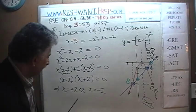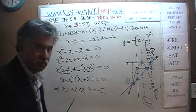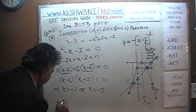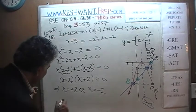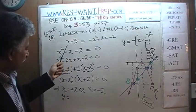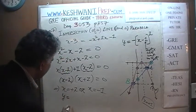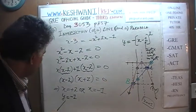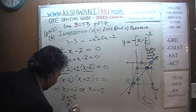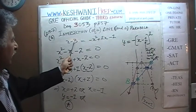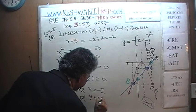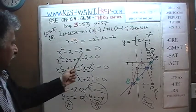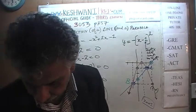Now that we have the x values, we substitute back into the line equation (which is simpler). When x is positive 2: y equals 2 minus 3 equals negative 1, giving us point A at (2, -1). When x is negative 1: y equals negative 1 minus 3 equals negative 4, giving us point B at (-1, -4). That's the algebraic solution — very straightforward and simple.